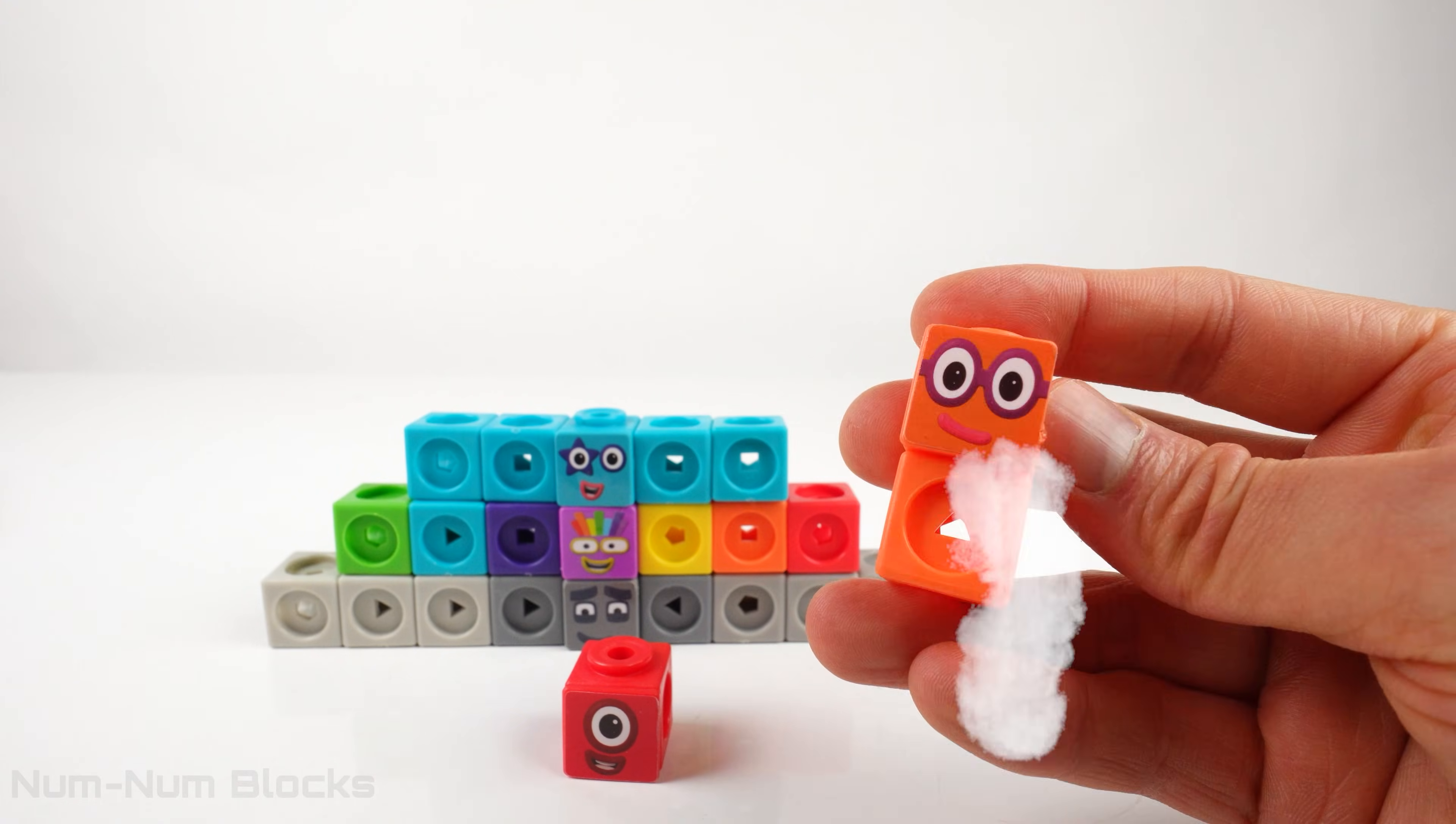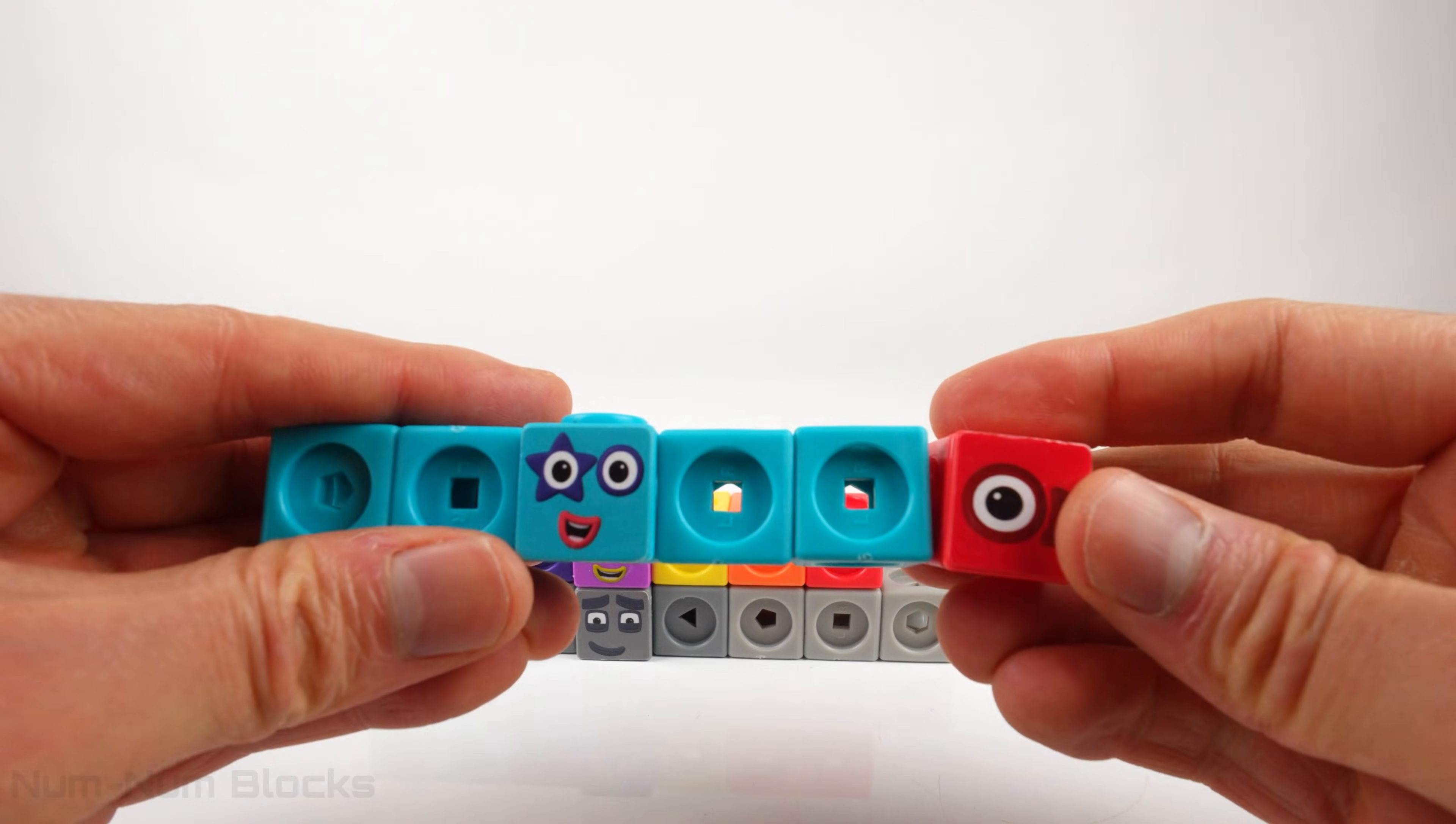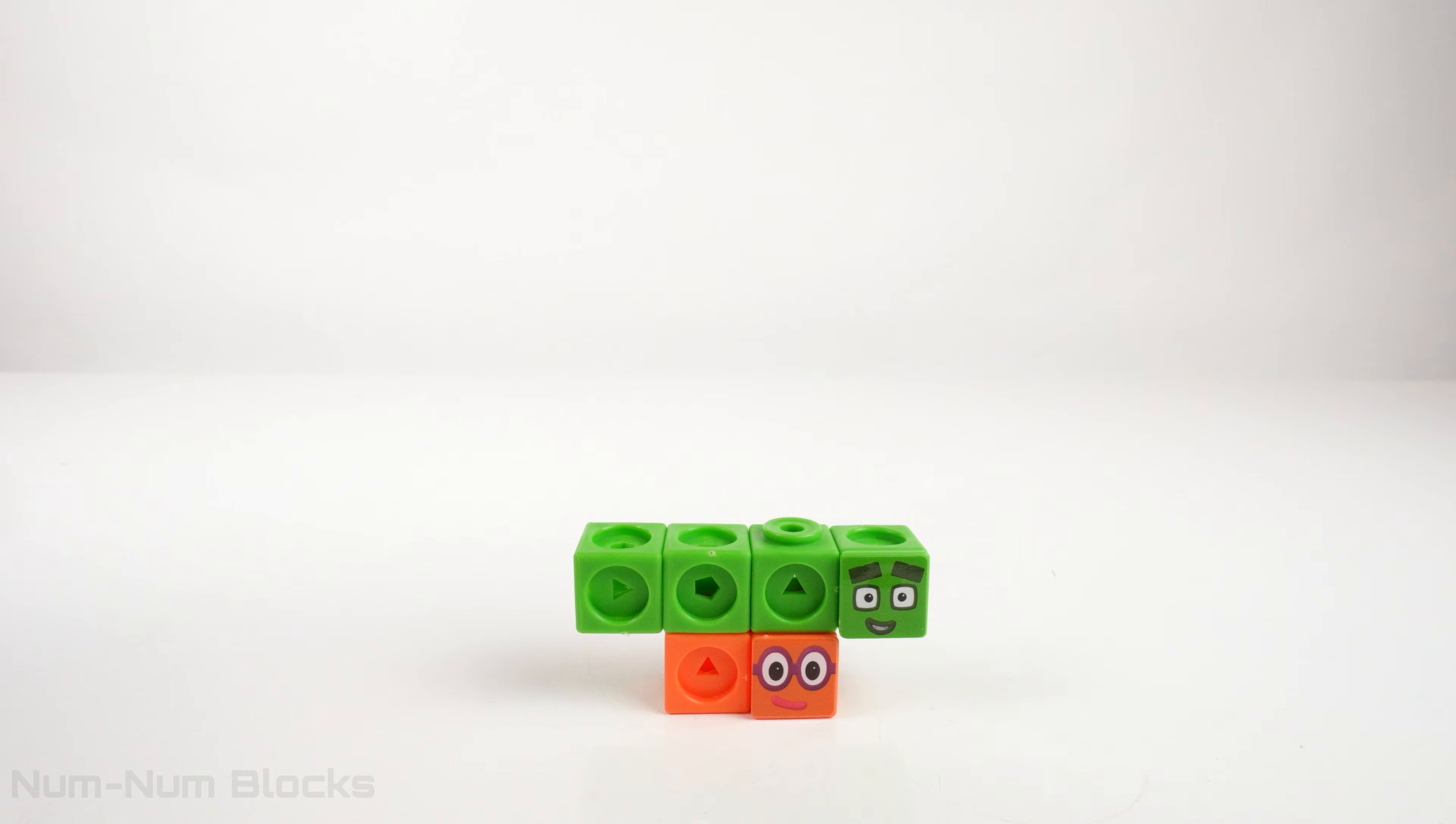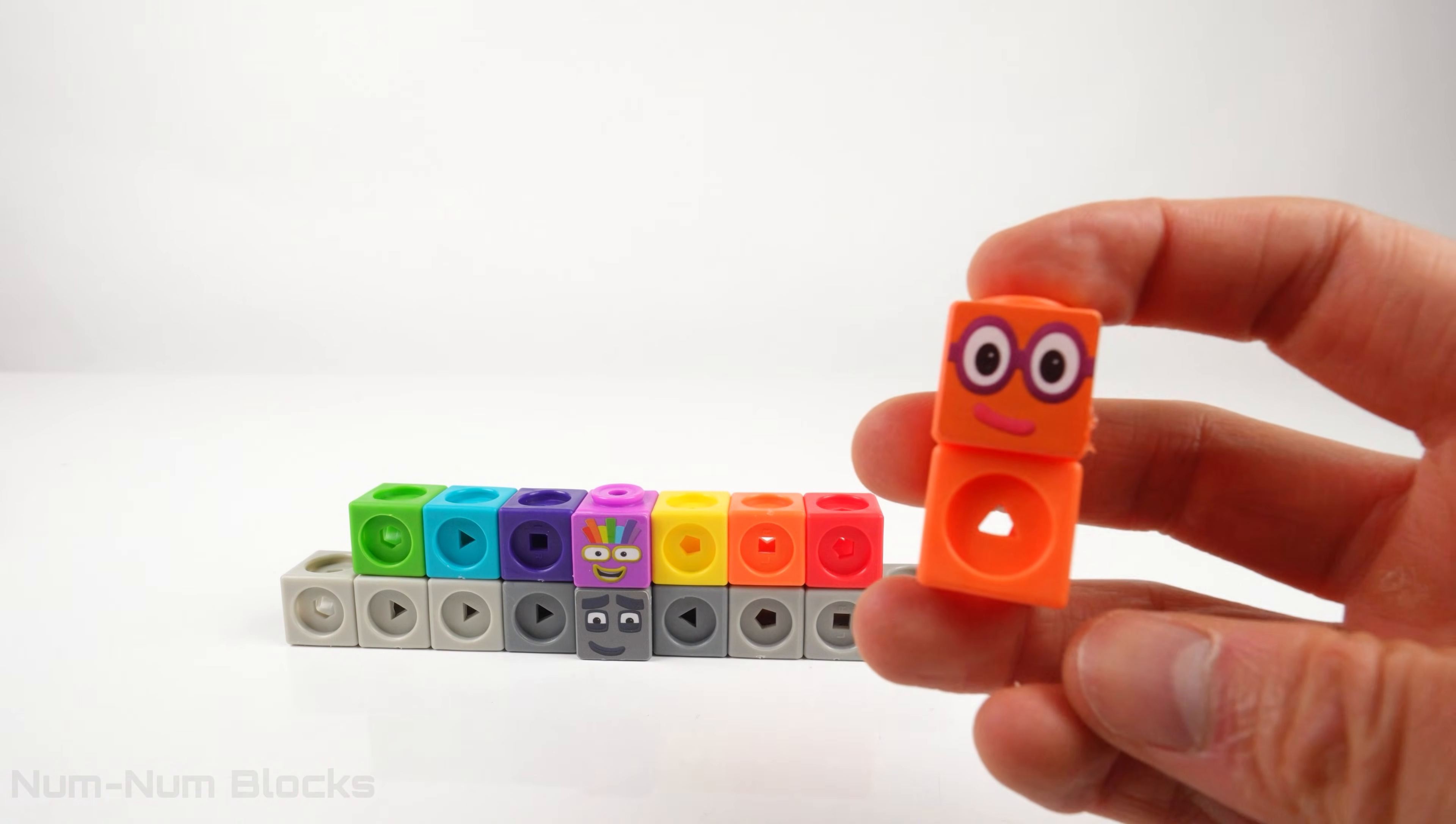2 ones is the same as 2. I'm going to use this 1 and add it to 5 to make the next even number. Do you know what 5 plus 1 is? 6! It's 6! Let's place 6 on top of 4. 2, 4, 6. Let's borrow 1 block from 2.